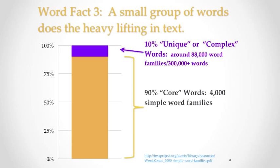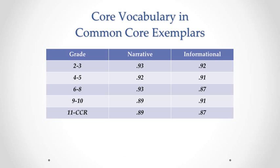This role of the core vocabulary — that is, the 4,000 simple word families — applies even to the Common Core exemplars of complex text in Appendix B. As you can see from the slide, even at college and career ready, the percentages of total words in text accounted for by the core vocabulary is high. But of course, that other extra percent of unique words is very, very critical to the meanings of text.